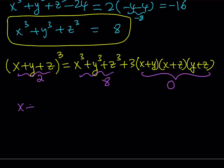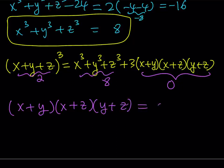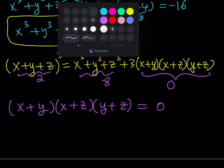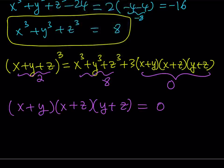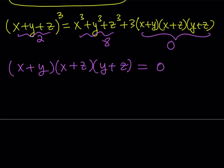From the zero product property, at least one of these factors must equal 0. It doesn't really matter which one because of symmetry. You might be asking whether this always works — it only works when the product equals 0. But at the beginning I said these numbers are special, like a, a squared, and a cubed, so if that's the case it's always going to work.